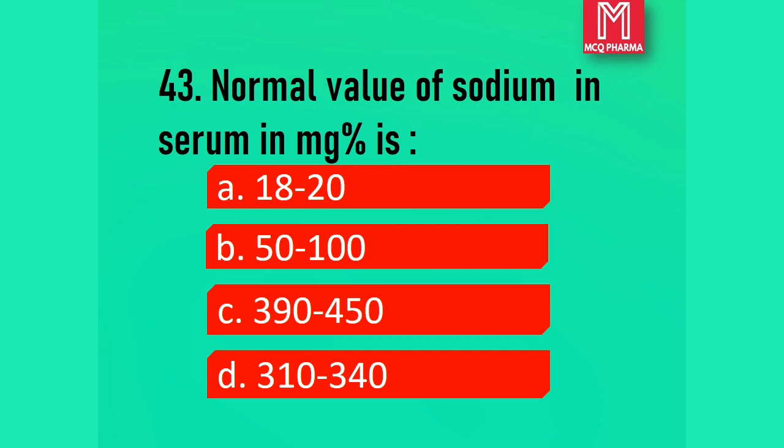Question number 43. Normal value of sodium in serum in milligram percentage is: Option A, 80 to 20. Option B, 50 to 100. Option C, 390 to 450. Option D, 310 to 340. Correct answer: Option D, 310 to 340.